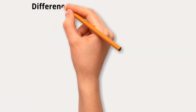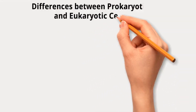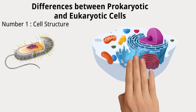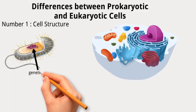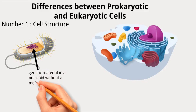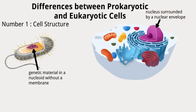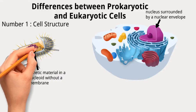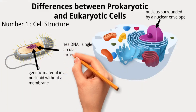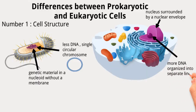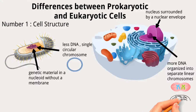Let us now move on to cover the differences between prokaryotic and eukaryotic cells. Number one: cell structure. Prokaryotic cells have genetic material in a nucleoid without a membrane, while eukaryotic cells have a nucleus surrounded by a nuclear envelope containing complex pore structures. Prokaryotic cells have less DNA, typically a single circular chromosome, whereas eukaryotic cells have more DNA organized into separate linear chromosomes. Eukaryotic DNA is associated with proteins to form chromatin and can compact into mitotic structures during cell division.